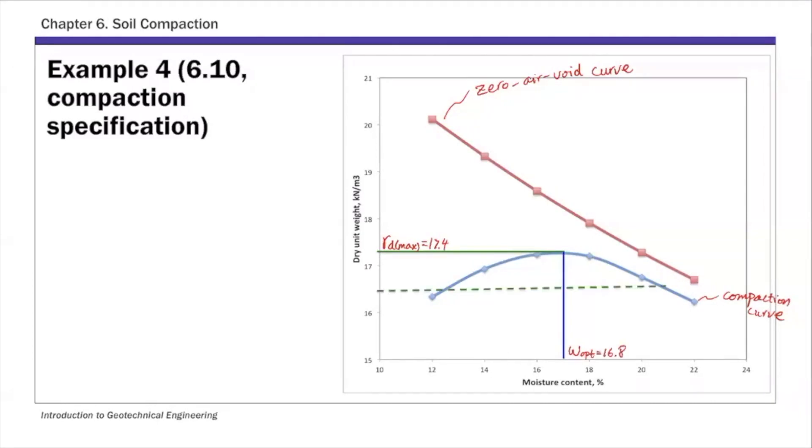the first specification calls for a relative compaction of 95%. So 0.95 times gamma d max. So this line here, this is 0.95 gamma d max. So that's the first specification. This is 16.54.